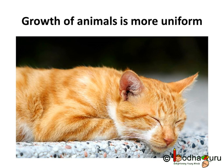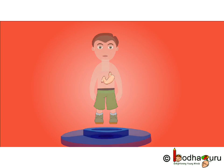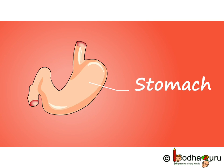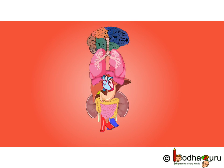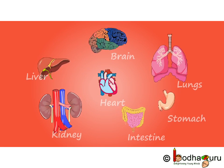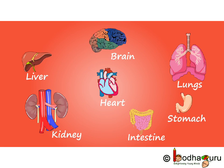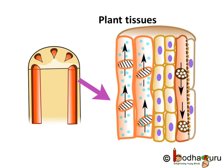However, cell growth in animals is more uniform. There is no such demarcation of dividing and non-dividing regions as in plants, but most of the cells stop dividing in complex animals such as human beings after a certain age. Our stomach digests food, while the kidney filters blood. So, the structural organization of organs and organ systems is specialized and localized in complex animals. In plants, it's less complex — you may say it's simple.